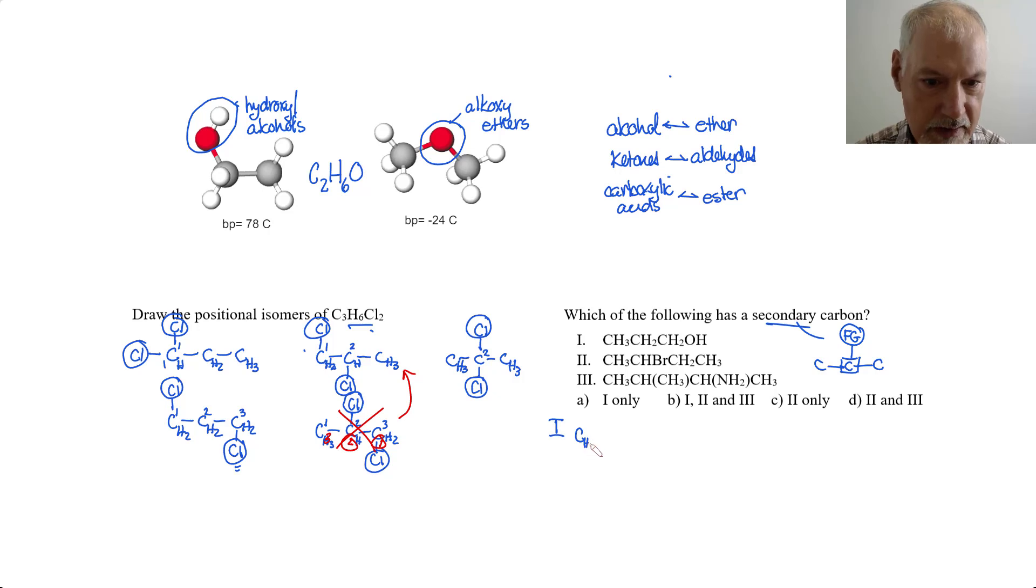I have CH3 connected to CH2, connected to CH2, and OH. So, there's my functional group. There's the carbon to which it's attached. And it is attached to but one other. This is a primary one. So, it doesn't fit the bill.